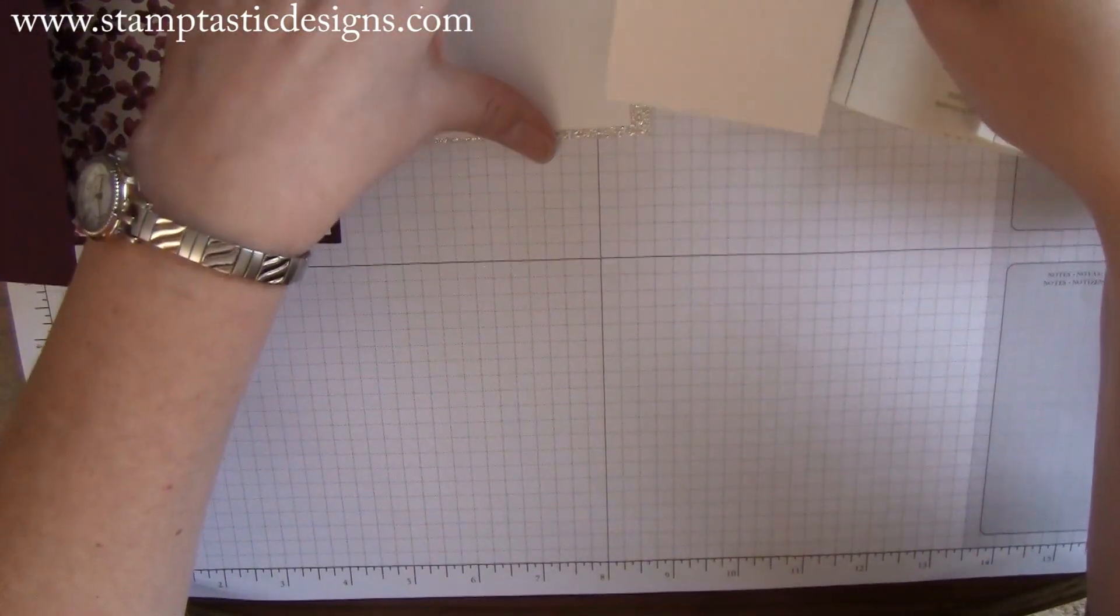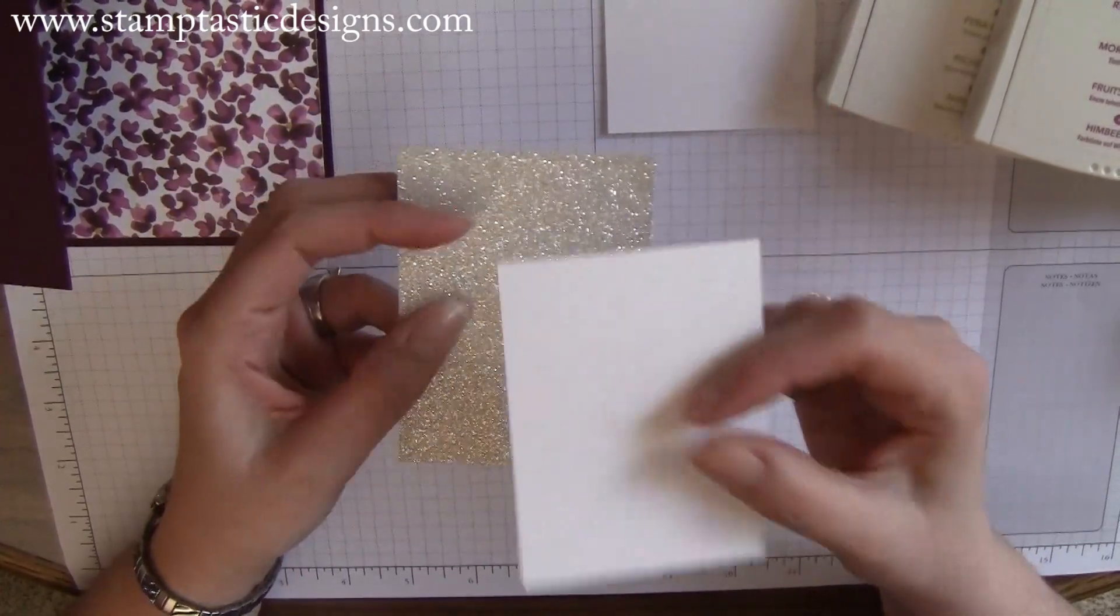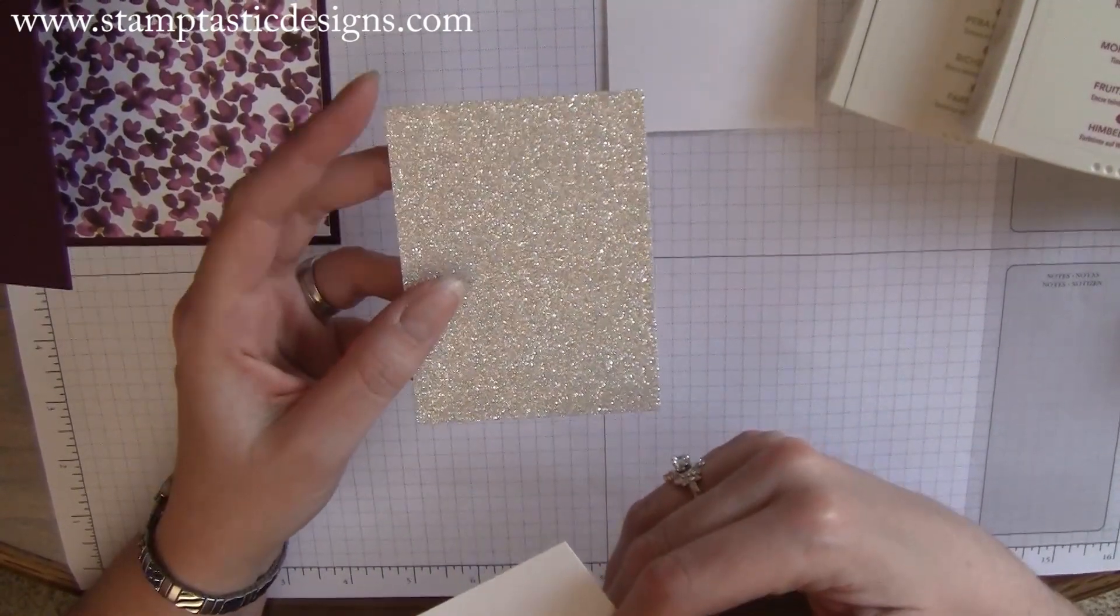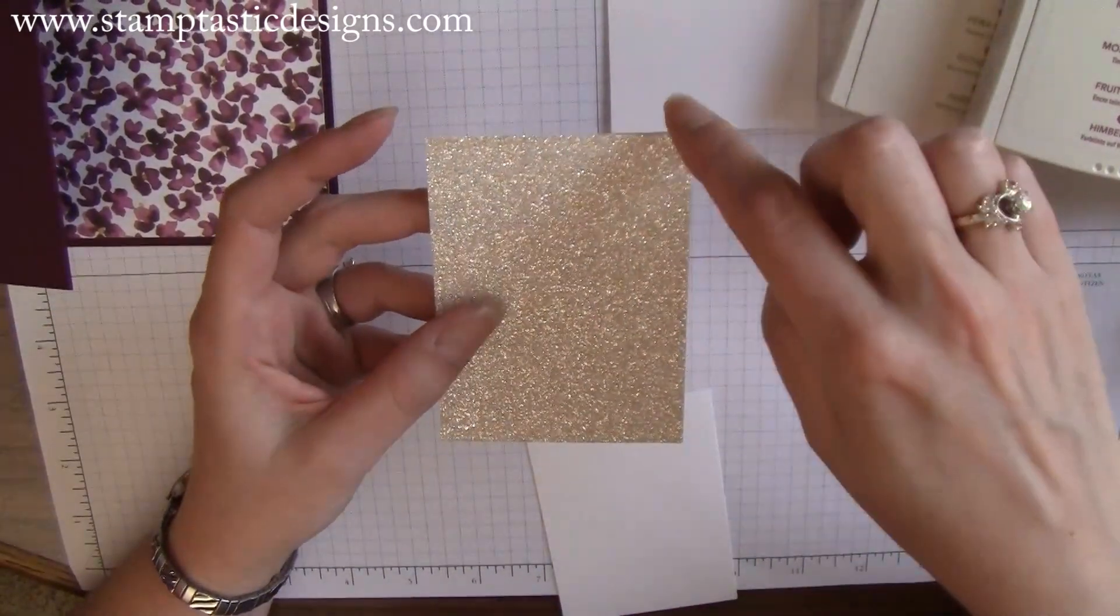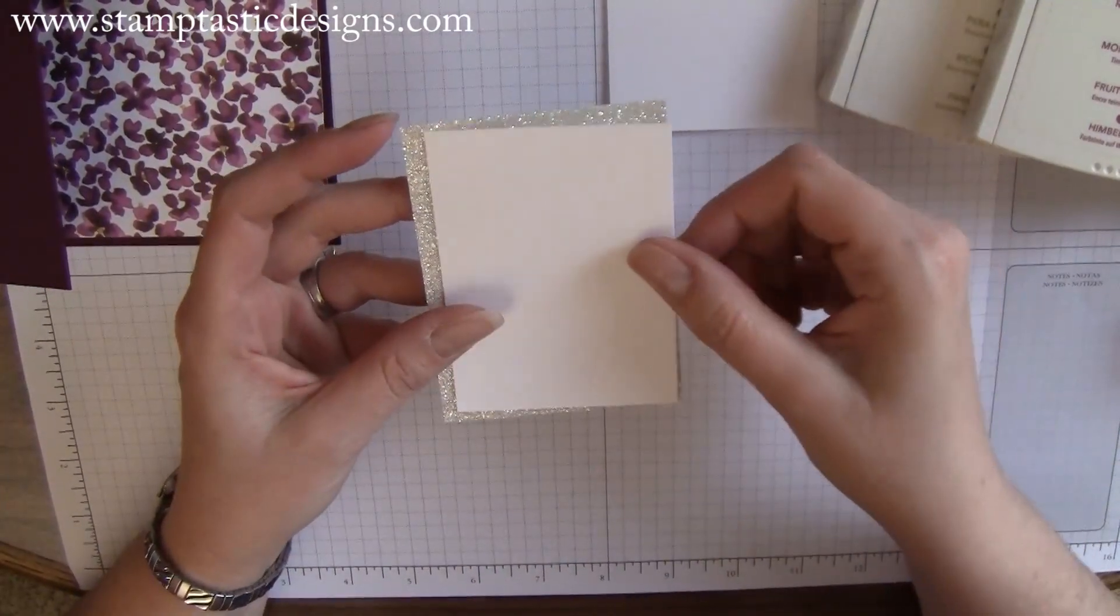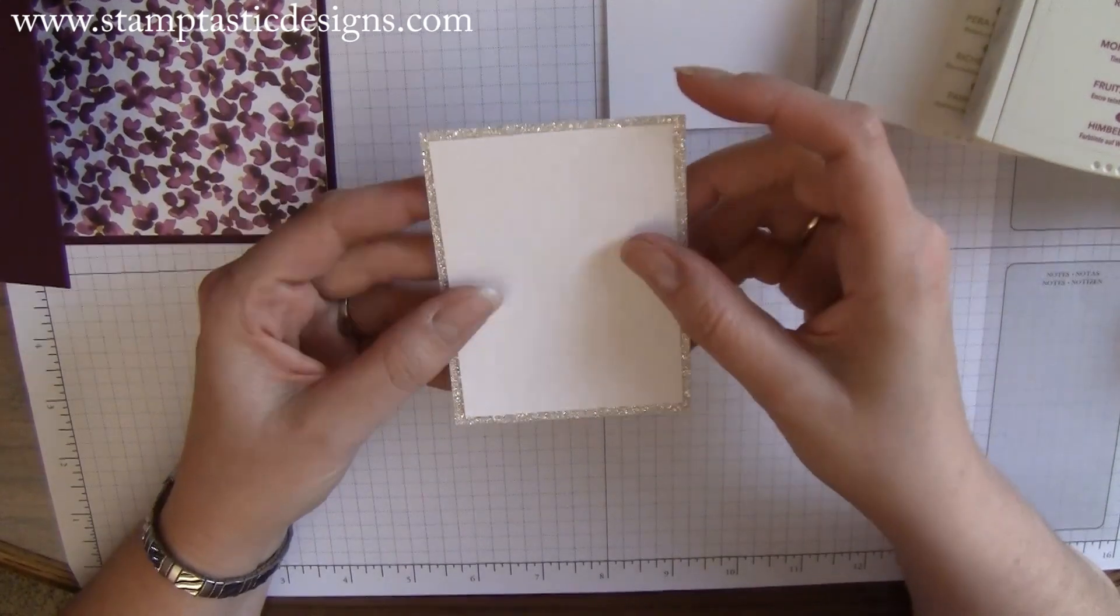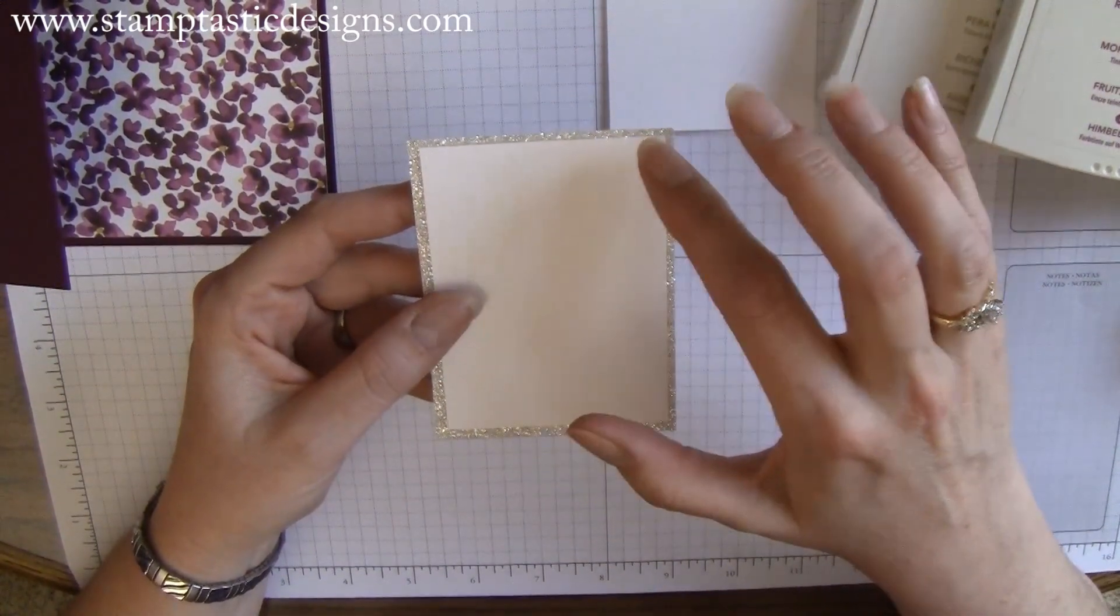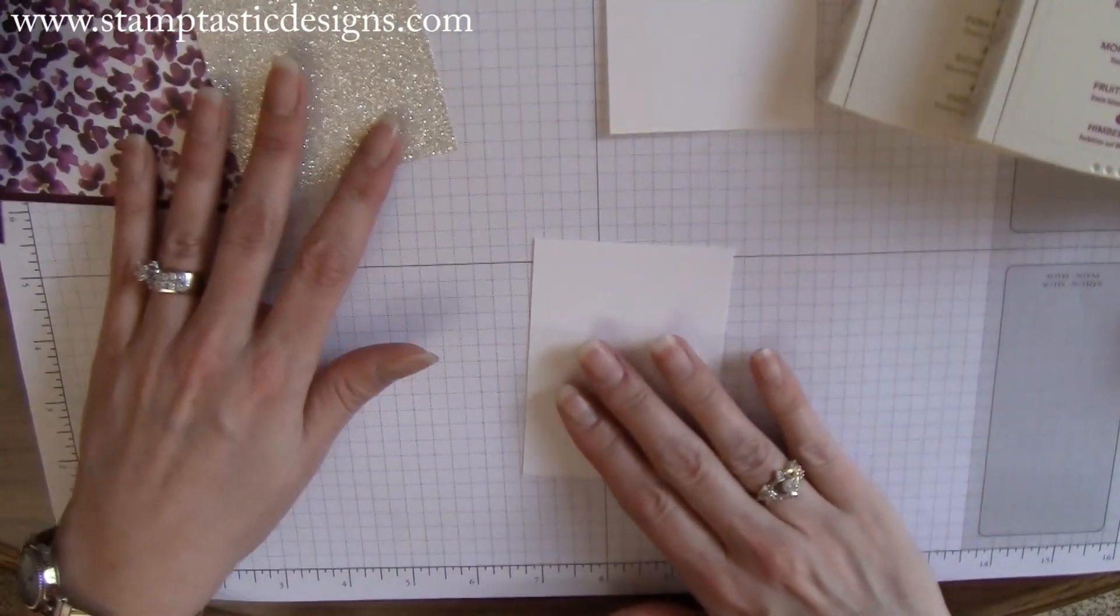I'm going to take some other pieces of paper—these are the pieces I'll do my stamping on. I have glimmer paper cut to three by four, and white paper that's a quarter inch smaller, so two and three quarters by three and three quarters. This is the one I'm going to stamp on.